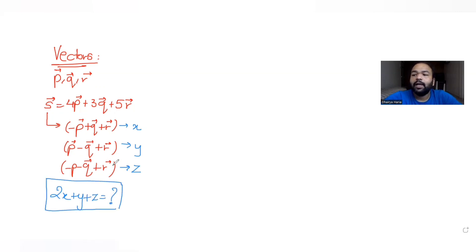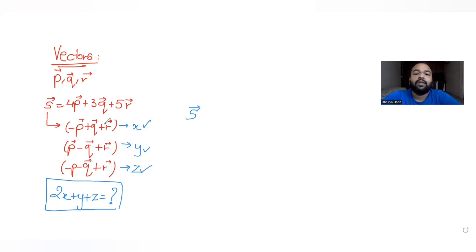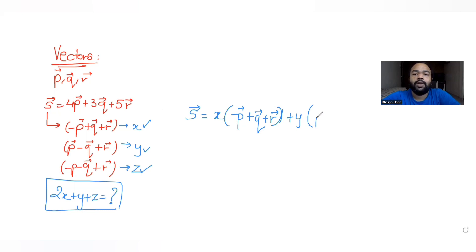Let's find the values of x, y, and z first. Applying the same idea — they have told us the components of vector s̄ along those three directions are x, y, and z respectively — so I can write s̄ as x times (−p+q+r), plus y times (p−q+r), plus z times (−p−q+r).